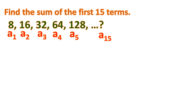The 15th term is not given, so we just write it as a question mark. We could find it if we wanted to, but since we're only asked for the sum, it's not necessary. It would be hard to manually add all the terms from 1 to 15, so we need a general formula.